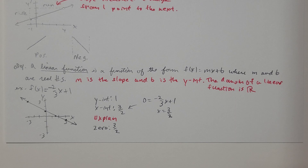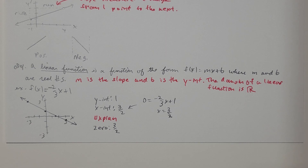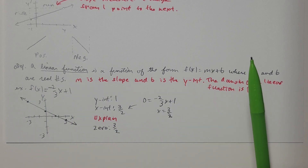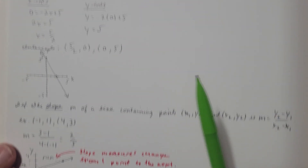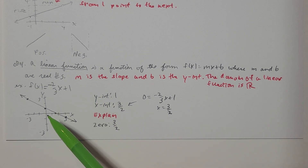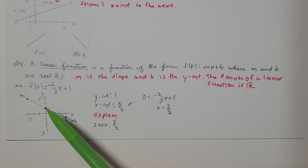The domain of any linear function is all real numbers. Let's look at the example f(x) equals negative two-thirds x plus 1. This line has a slope of negative 2/3 and a y-intercept at 1. I'm going to use the slope and y-intercept to graph the line. The y-intercept is 1, meaning (0, 1) is the starting point where the line crosses the y-axis.